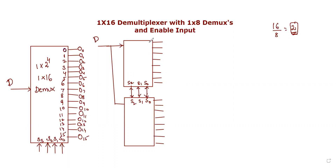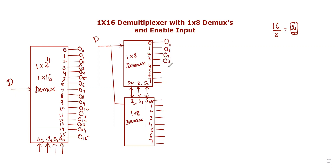This is the output. This is the 1 by 8 demux, and this is also the 1 by 8 demux. The outputs of the second demux are O10, O11, O12, O13, O14, O15.